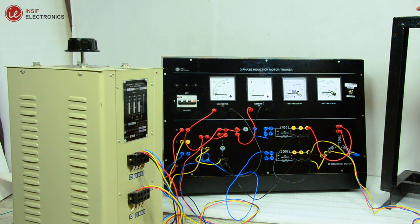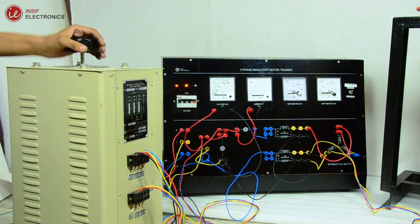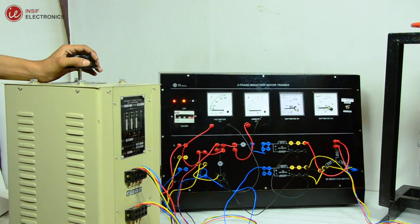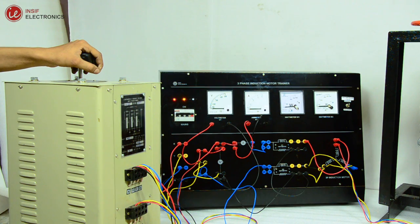Now switch on the panel by pulling up the MCB. This is block rotor test so be careful while increasing the voltage as the current should not exceed the rated current. Increase the voltage carefully and stop increasing as soon as the current reaches to the rated current that is 2A.